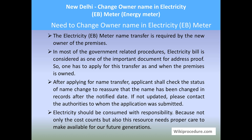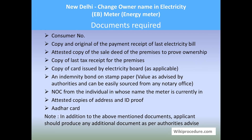Let us see the documents required: consumer number (unique for each consumer), copy and original of the payment receipt of the last electricity bill, attested copy of the sale deed for the premises, copy of the last tax receipt/bill for the premises, copy of the card issued by the respective electricity board as per state norms, an indemnity bond on stamp paper (value specified by authorities, also available from a notary office), NOC from the individual in whose name the meter is currently registered, and attested copies of address and ID proof such as Aadhaar card. Authorities may also ask for additional documents.